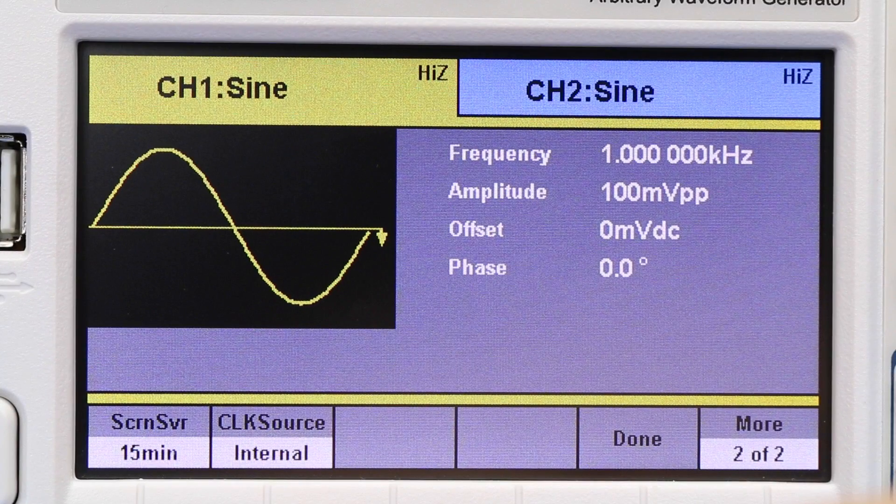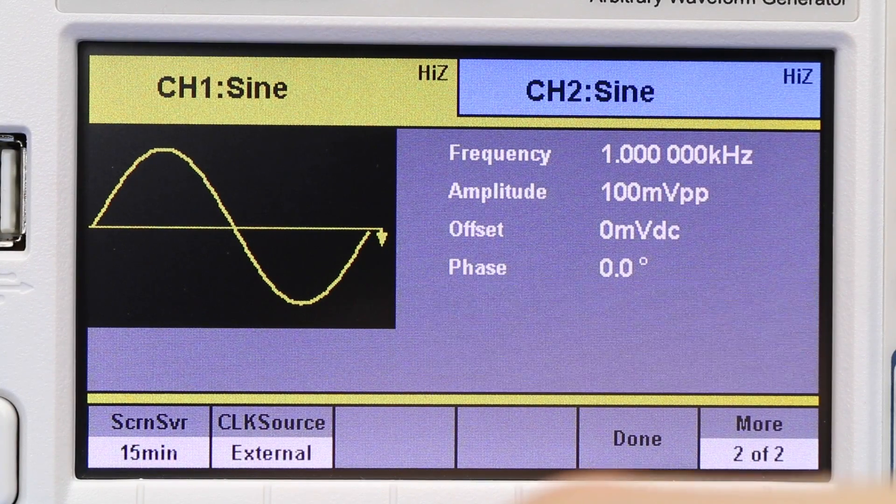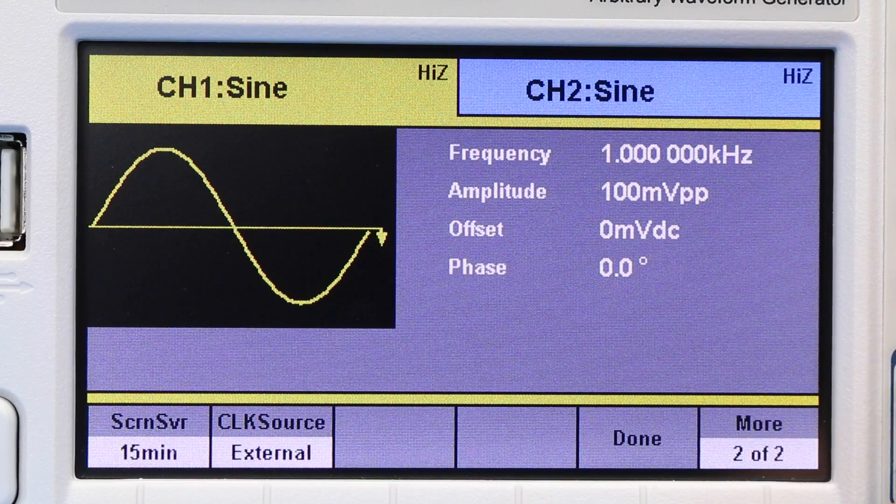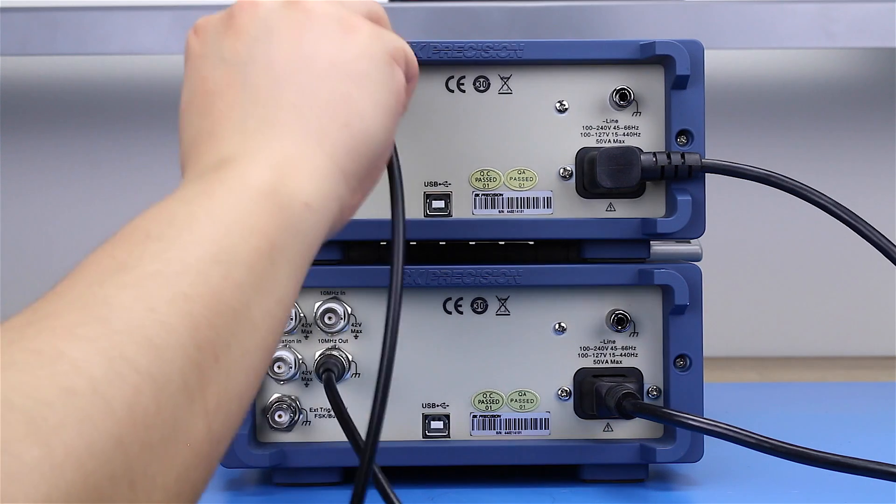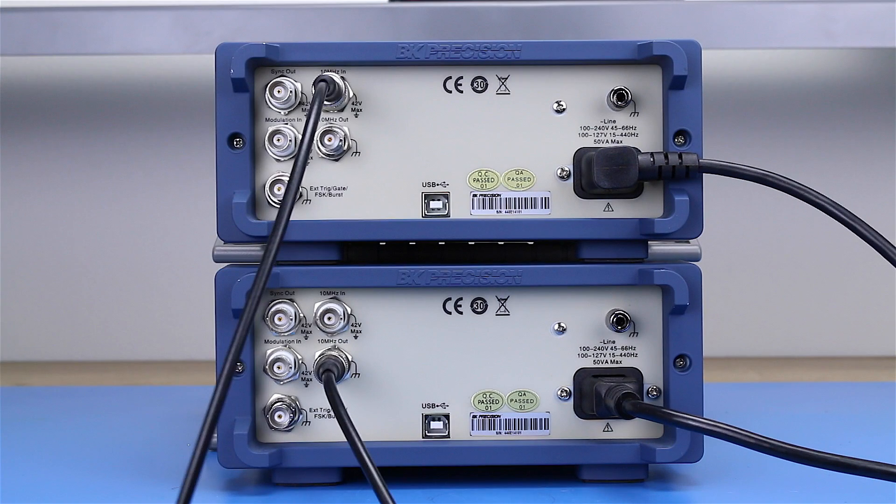On unit 2, set clock source to external. Connect the 10 MHz out BNC connector on unit 1 to the 10 MHz input BNC on unit 2.